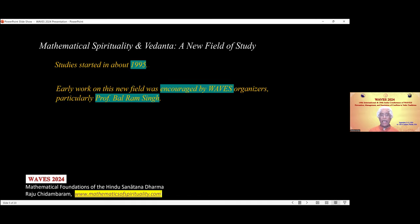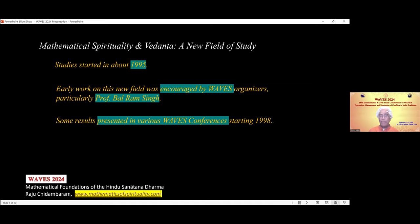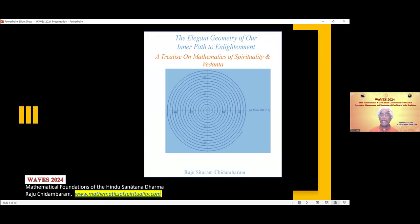I started the mathematical study of Vedanta in 1995, and early encouragement was received from VAVS organizers — particularly, I am grateful to Professor Balram Singh for encouraging me in this work. Many results of my work have been presented in previous VAVS conferences starting in 1998, and it has also resulted in four books. The most recent book, called The Elegant Geometry of Our Inner Path to Enlightenment, is the basis for this talk.